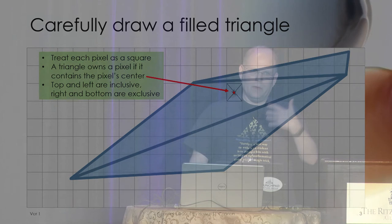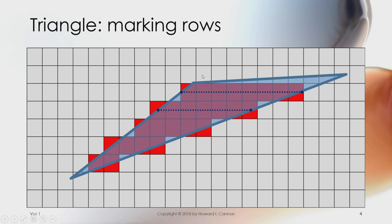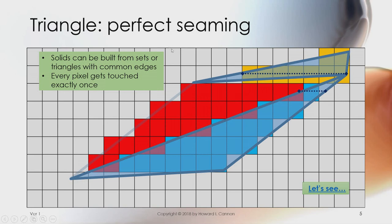We basically can just then go and mark all these rows, and we're going to turn the analog, essentially sort of the analog floating point triangle, into a set of pixels. And as I mentioned before, we can seam these up perfectly.